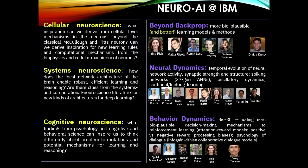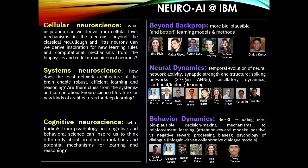That last slide tries to organize mentally the different efforts going on within IBM along the lines of cellular, systems, and cognitive neuroscience, and how they map to different aspects of neuroscience-inspired AI. Thank you very much.